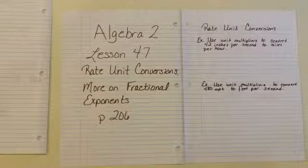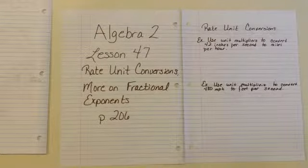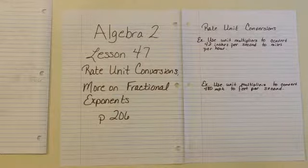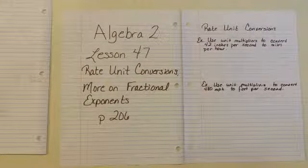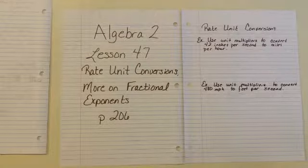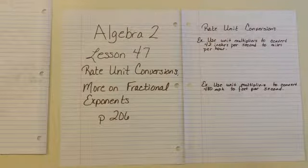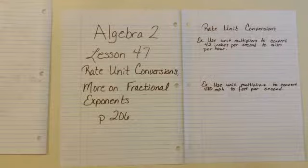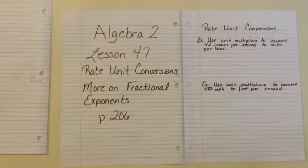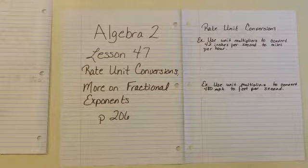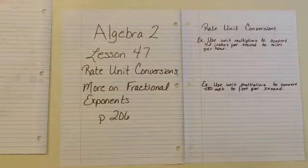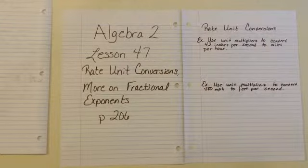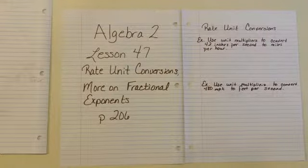This is Algebra 2 Lesson 47. We're going to talk about rate unit conversions and more on fractional exponents, starting on page 206. Rate units, such as miles per hour or feet per second, contain both a distance unit and a time unit. To convert the rate units, we use distance unit multipliers to convert the distance units and time unit multipliers to convert the time units.